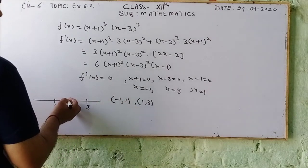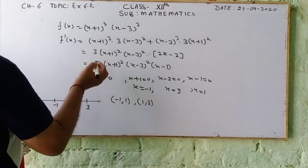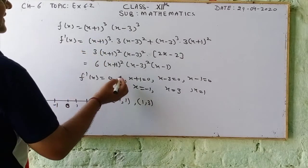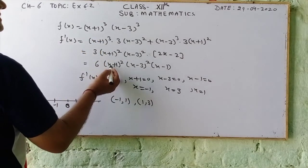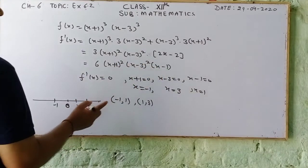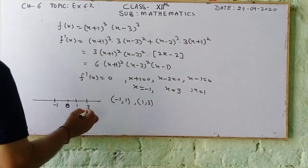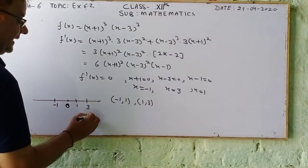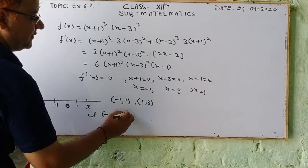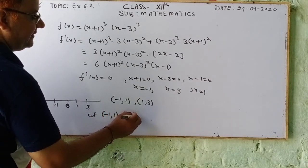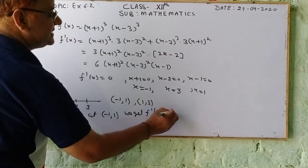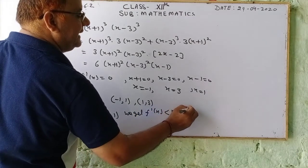For the interval (-1, 1), we put in x = 0. Evaluating f'(0), we get a negative value. So f'(x) is less than 0 on (-1, 1), which means the function is decreasing on this interval.